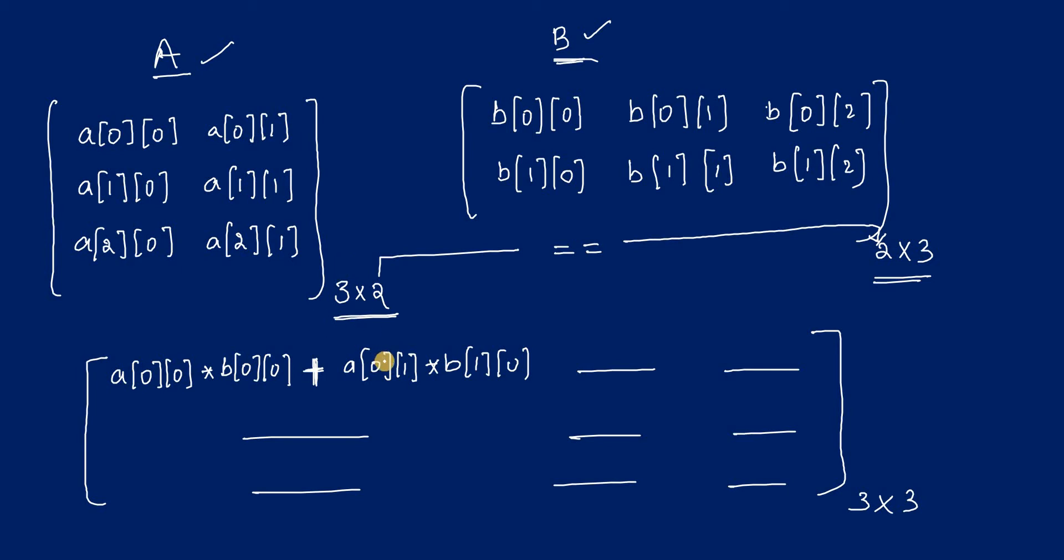After doing multiplication, the resultant array is C. What will be the order of this matrix C? That is 3 by 3. The rows of matrix A and the columns of matrix B will become the rows and columns of resultant matrix.